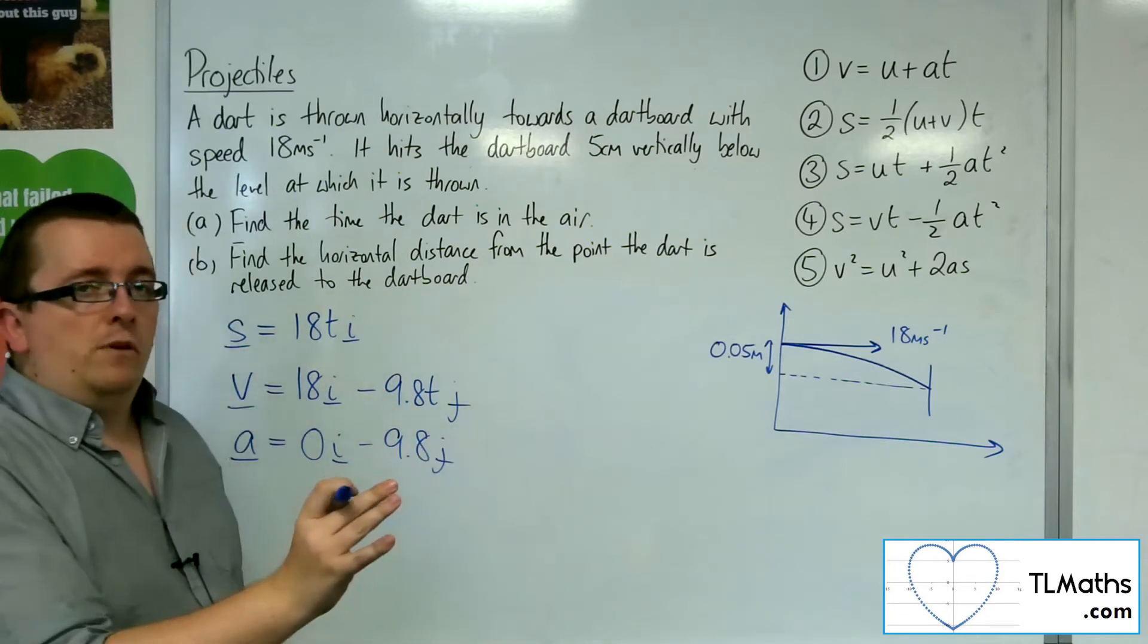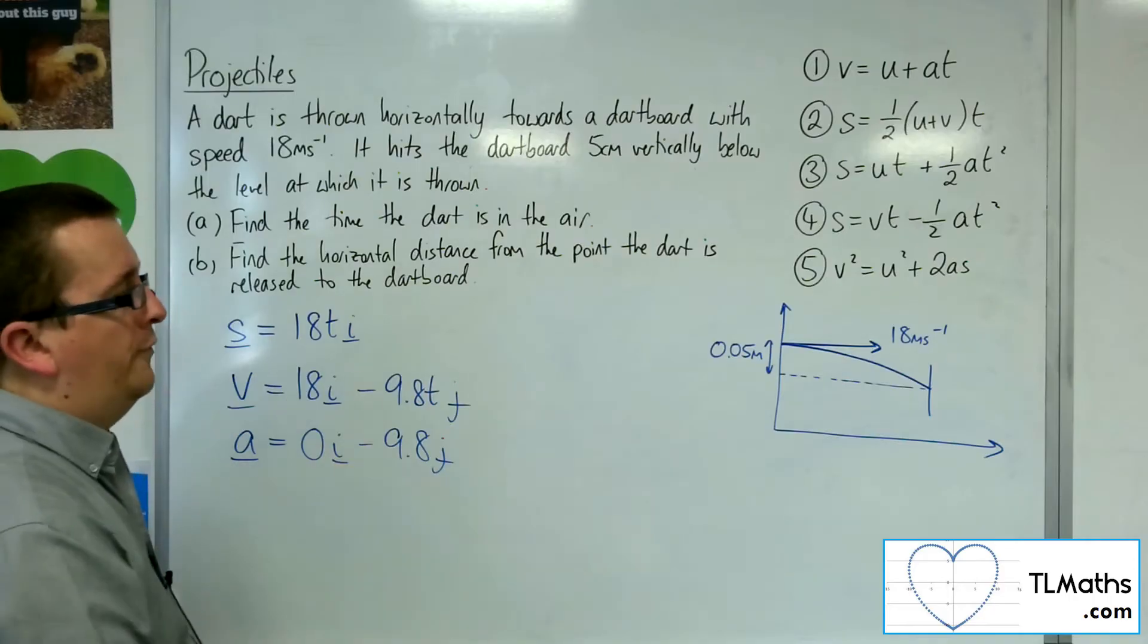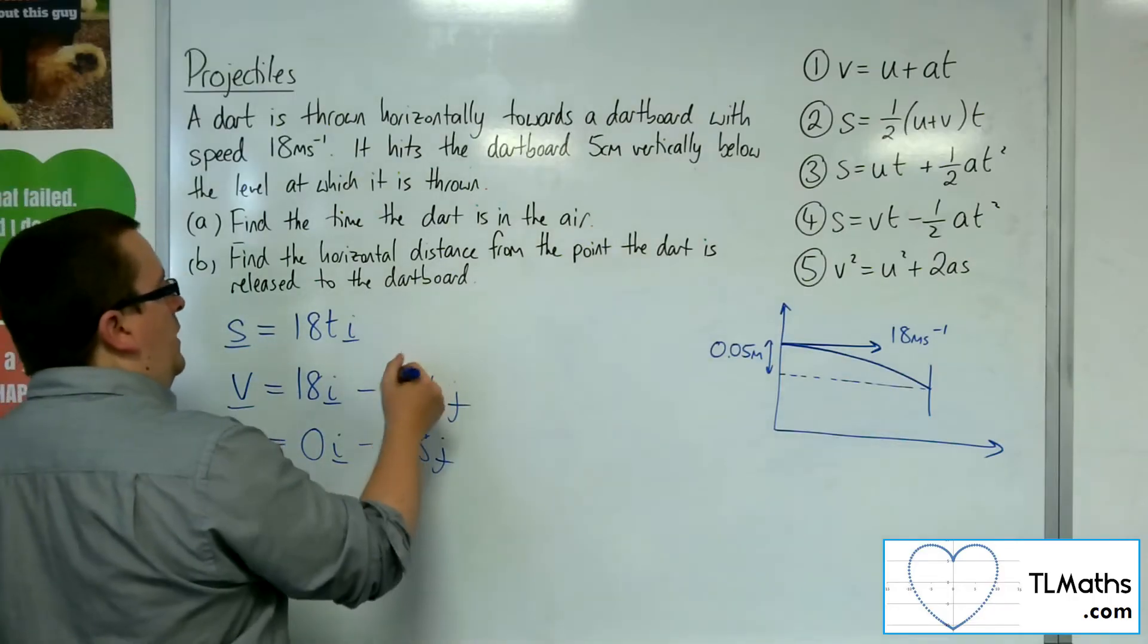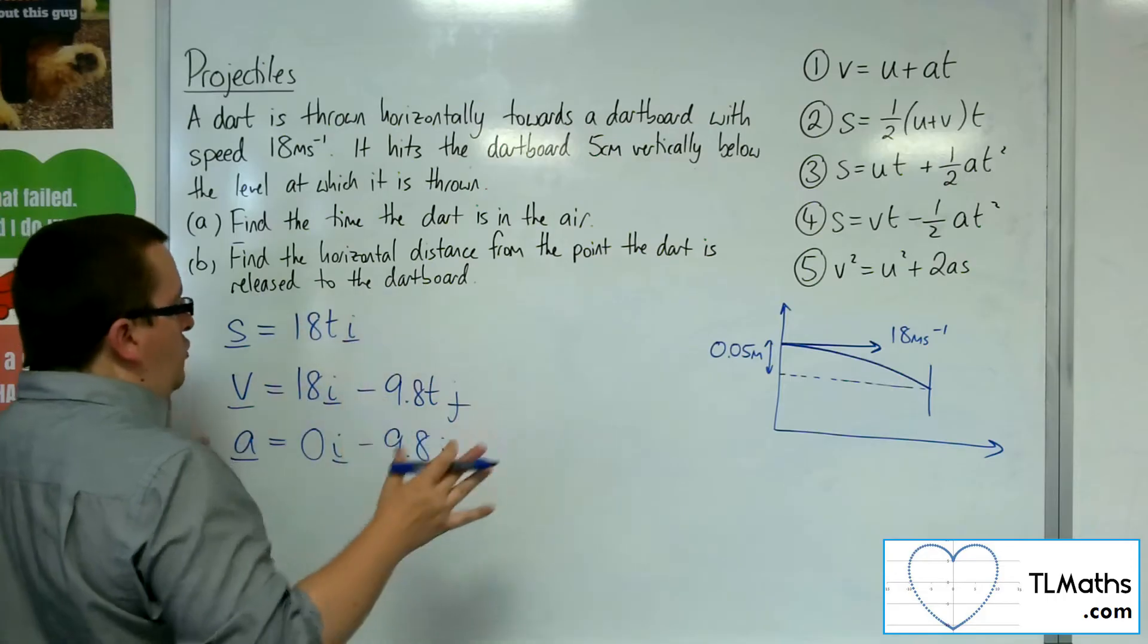But we could throw it from 0, 0, and we'd still be looking at it dropping 5 centimetres down. So we couldn't just ignore it here.